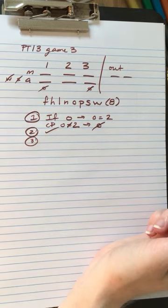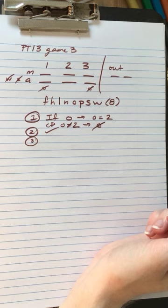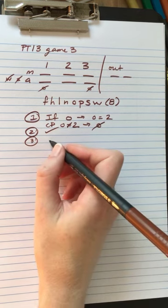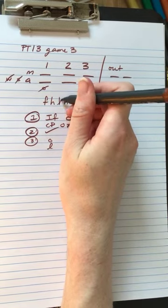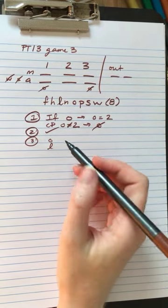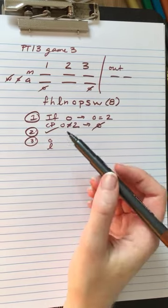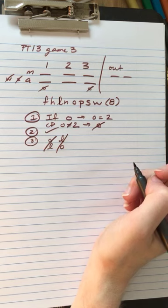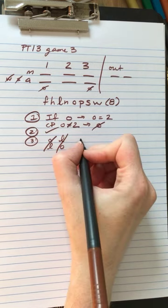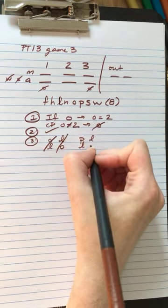Rule three, neither oils nor pastels can be scheduled for the same day as lithography. So O, L, I'm going to do a little loop on my L. O and L, that's not allowed. We wouldn't be allowed to put L in the morning, O in the afternoon either. And we can't have PL or LP.